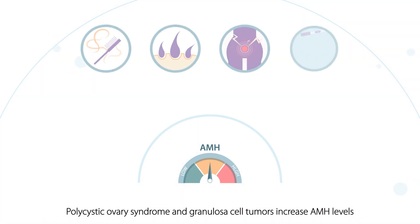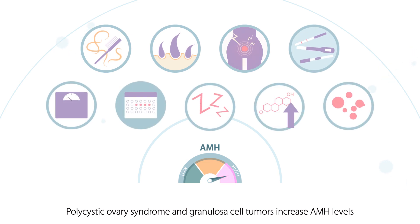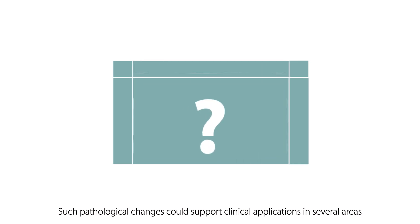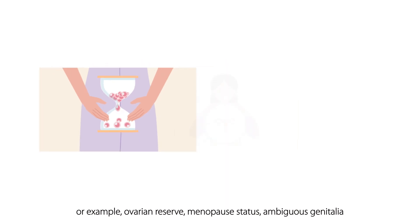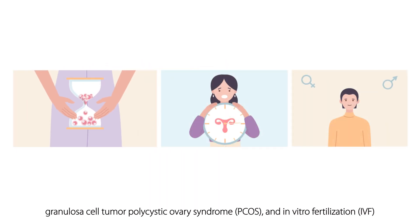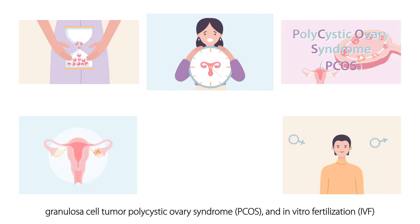Polycystic ovary syndrome and granulosa cell tumors increase AMH levels. Such pathological changes could support clinical applications in several areas, including ovarian reserve, menopause status, ambiguous genitalia, granulosa cell tumor, polycystic ovary syndrome, and in vitro fertilization.